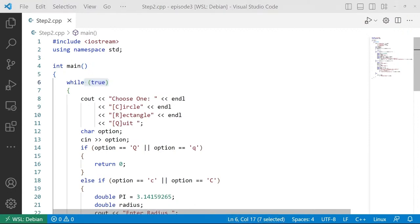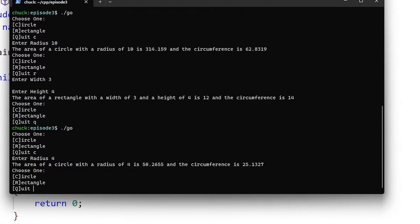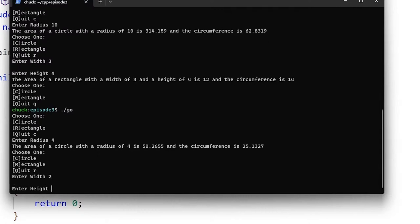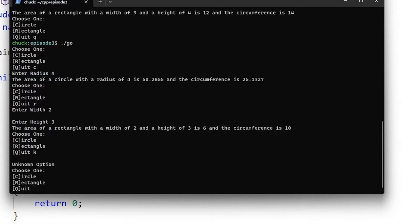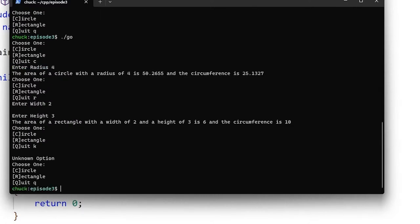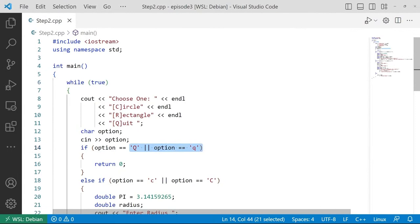If I run my application, we can choose to enter a circle. We'll enter the radius of a circle, let's say 4, and I get a reasonable response. Look, the menu has repeated. This time I'll choose R for rectangle, a width of 2, and a height of 3. We get the correct answer as a response, and then I'll hit Q. Let's hit something else. Let's hit K, which it says unknown option. Now we'll try Q and the program exits. So we are checking for both upper and lower case for the Q. That way we can type in either one.